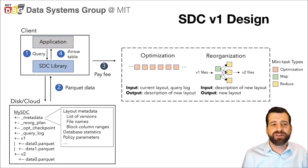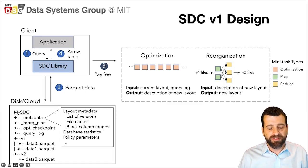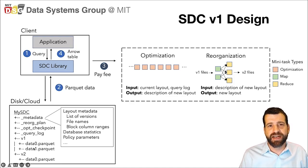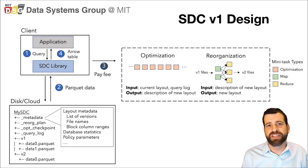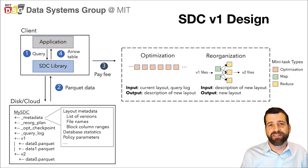Internally, these SDC files are represented as several different data objects. If you look at the lower left, you see there are several different versions of the data, created over time as clients interact with them. Each version is represented as a set of data partitions where each partition is a Parquet file that lives on disk. In addition, these SDCs contain metadata information — for example, a list of all the versions, the file names, the ranges of the data in each one of the blocks or partitions, as well as some statistics about the data itself.